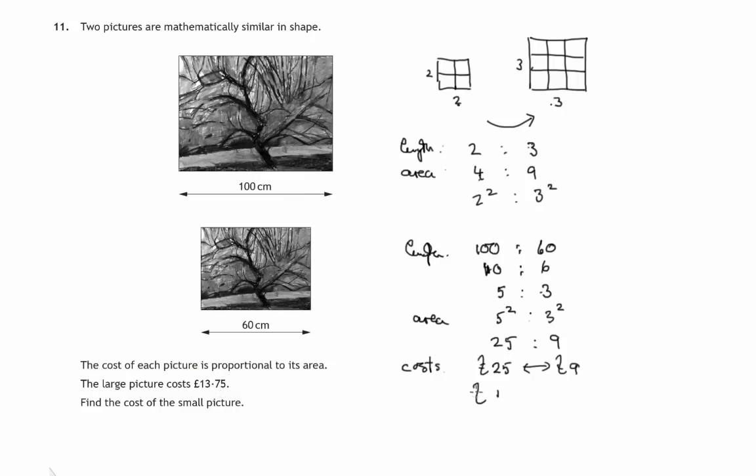If the large one costs £1, that would be a 25th, we would divide by 25. But it actually costs £13.75, so multiply both of these numbers now by 13.75.